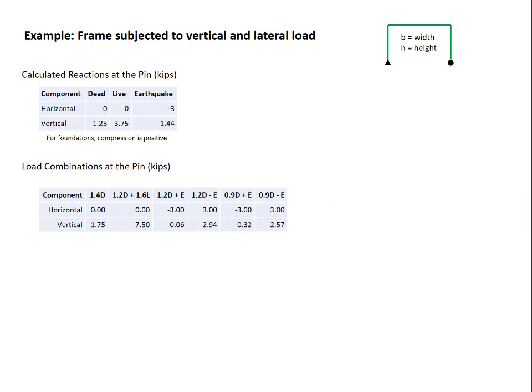Each of these columns is obtained by scaling the corresponding column in the table above and adding them as indicated. We'll do an example calculation. We'll look at 1.2 dead minus the earthquake load, looking only at the vertical component.